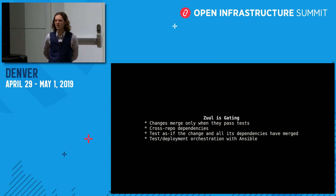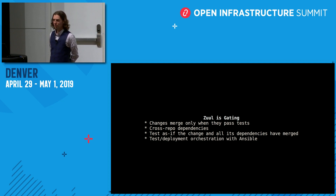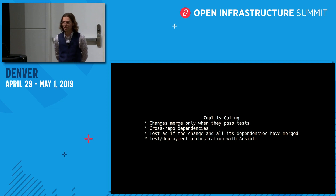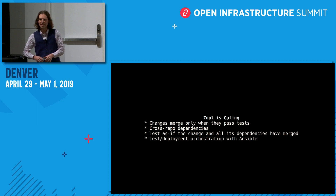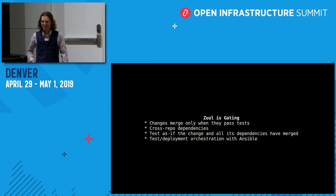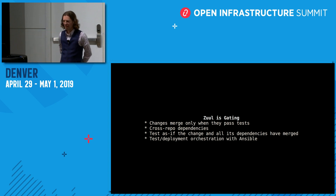This is a Zool update session but in case you're not familiar with it, Zool is a gating system. What we mean by that is that it helps you merge changes, but only when they pass tests, and it does so automatically. It's especially good at handling changes across different repositories — what we call cross-repo dependencies — and these are used heavily in the OpenStack project because of all the different components that make up OpenStack. It lets developers make a bunch of changes and say that they depend on each other and Zool tests them all together.